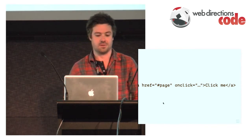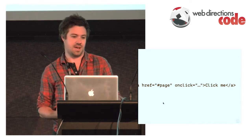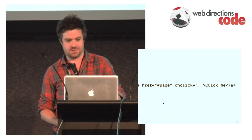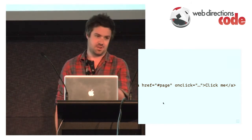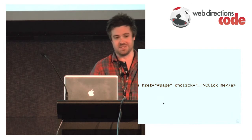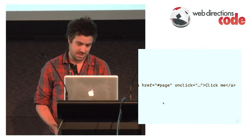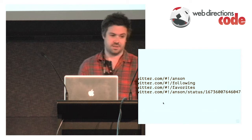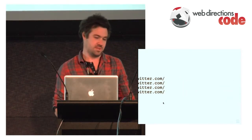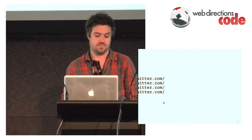Hash characters go back a long way in the web and they're really a client-side convenience. They were probably implemented initially to allow you to have a table of contents at the top of a long page and jump down to sections. Something I only learned relatively recently: anything after a hash in a URL, the server doesn't even see it — browsers don't pass that information through to a server. If you have URLs like Twitter's hash-bang URLs, none of that stuff is getting to the Twitter server. Twitter just sees all of those requests as requests for the front page.